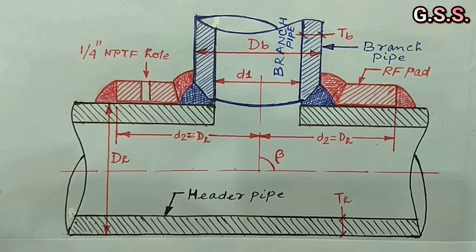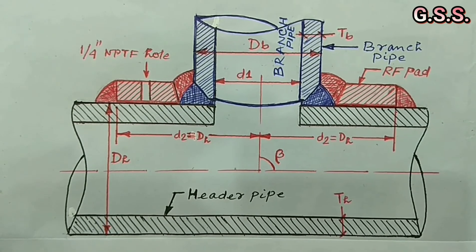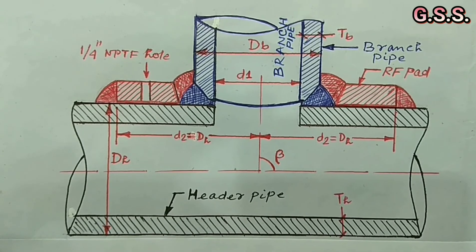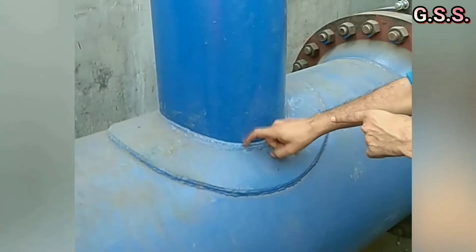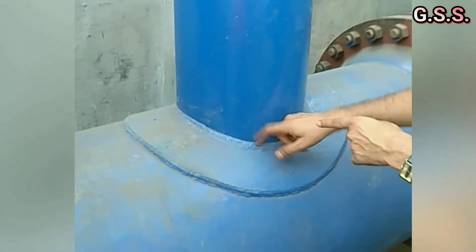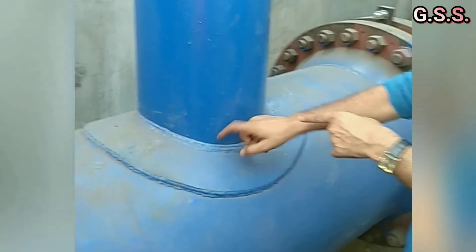Where cyclic operation is there, that means temperature changes in a cyclic manner, direct branching should be avoided. This is an 8 inch by 3 inch unreinforced branching without RF pad and this is a reinforced branching with RF pad.